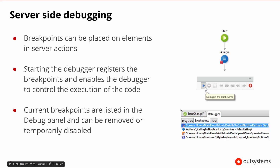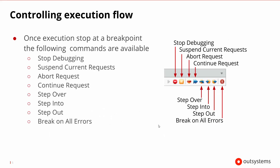If we want to see more, we can go to the debugger tab to get more information about the debugging, including the list of breakpoints that are currently there. From there, we could remove the breakpoints or disable the breakpoints. So there are a lot of nice things to be able to see where the breakpoints are going to be.